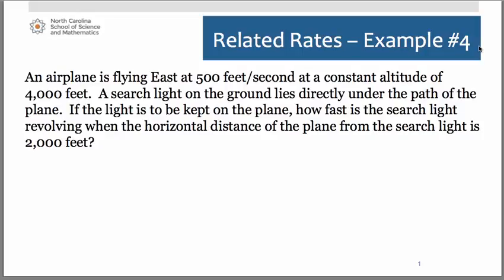Let's look now at an example of a related rate problem that's going to involve some trigonometry. We have an airplane flying east at 500 feet per second at a constant altitude of 4000 feet. A searchlight on the ground lies directly under the path of the plane. If the light is to be kept on the plane, how fast is the searchlight revolving when the horizontal distance of the plane from the searchlight is 2000 feet?